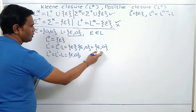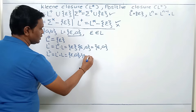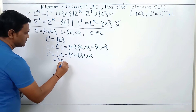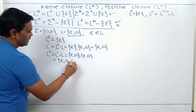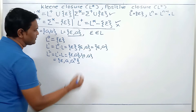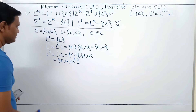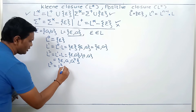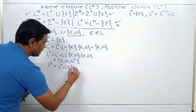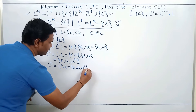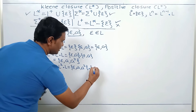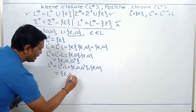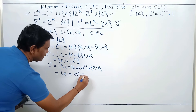L^1 dot L is also {epsilon, a}. So if we calculate L^2, we get {epsilon, a, a^2}. For L^3, it is L^2 dot L, where L^2 is {epsilon, a} and L is {epsilon, a}, so L^3 becomes {epsilon, a, a^2, a^3}.